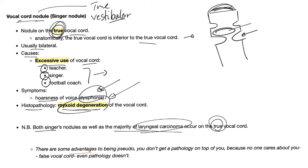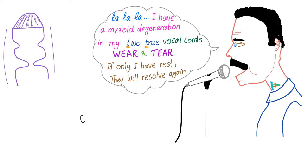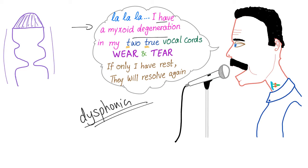Histopathology: you'll find myxoid degeneration — this is a very famous exam question. Please remember, singer's nodule as well as the majority of laryngeal carcinoma occur on the true vocal cord. The false vocal cord — even pathology doesn't care about it, because it's pseudo. Cause: overuse. Pathology: myxoid degeneration. Treatment: rest. If only they have rest, they will resolve again.